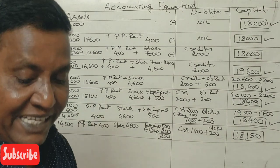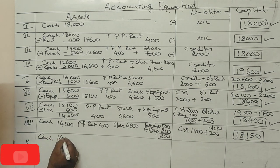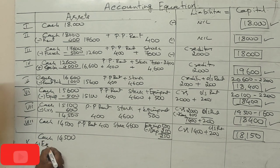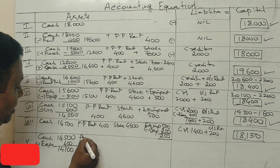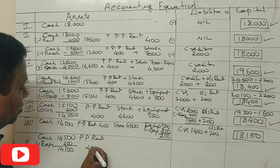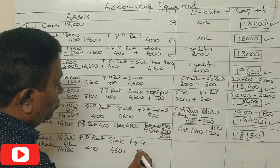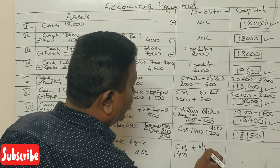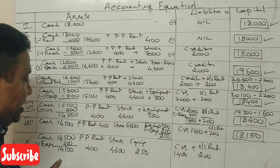Last transaction: business expenses ₹400. Cash was ₹14,500, pay ₹400 expenses, cash becomes ₹14,100. Prepaid rent ₹400, stock ₹4,600, equipment ₹250 (after depreciation). Creditors ₹1,400, outstanding rent ₹200. Total liabilities ₹1,600.